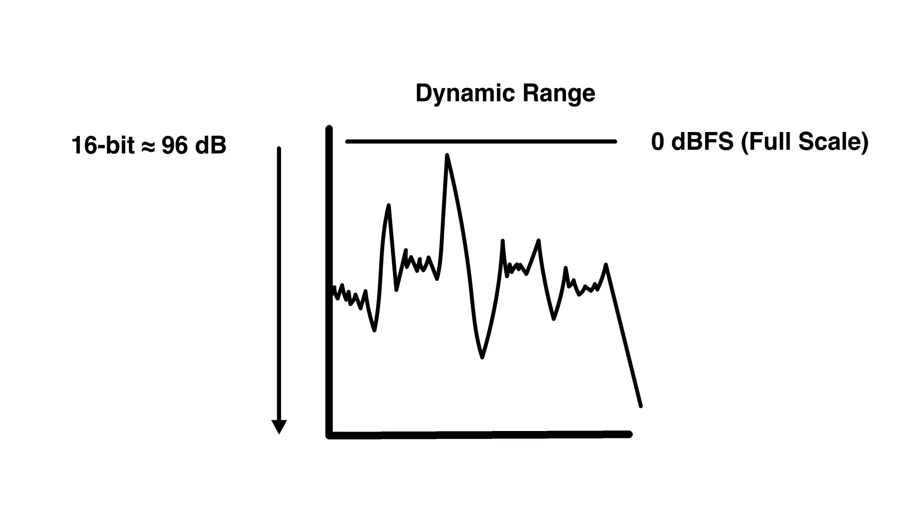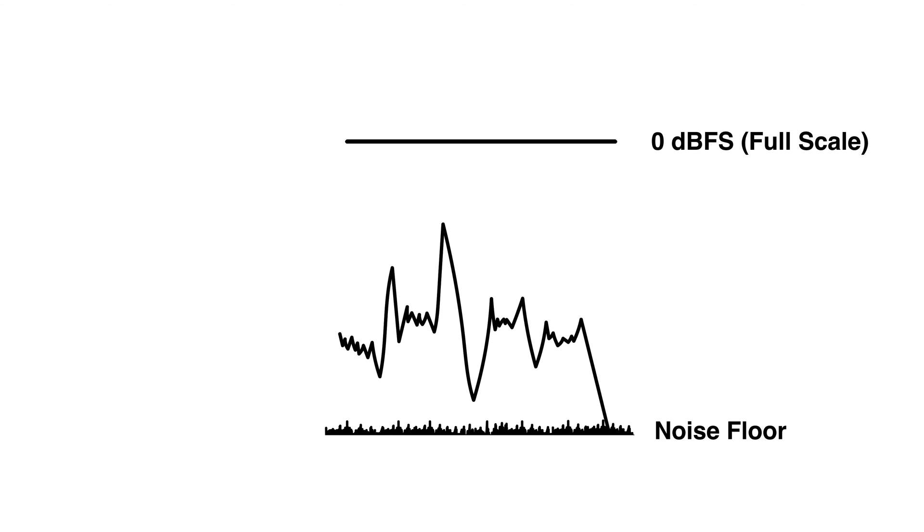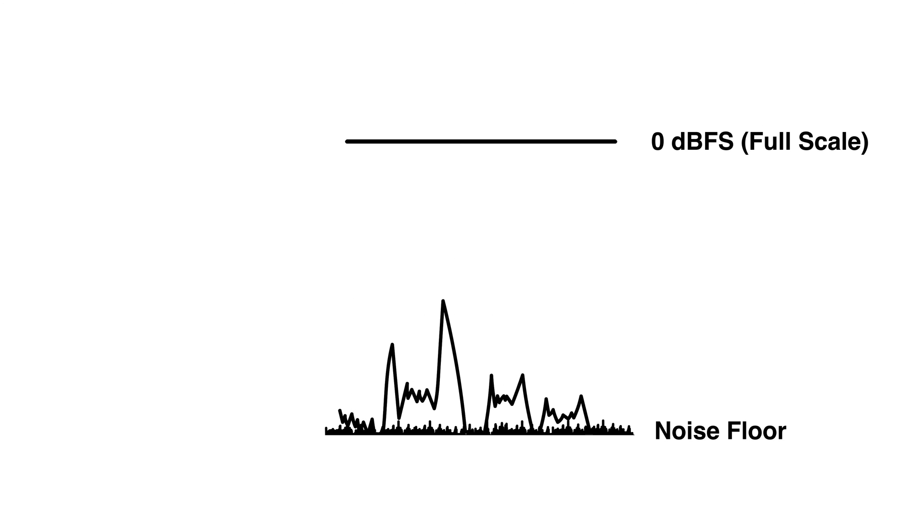At around minus 96 dBs we have a theoretical noise floor which is basically noise that gets introduced due to the process of quantizing this wave. So this also limits the quietest sounds that we can record until they get masked by this noise floor.